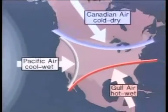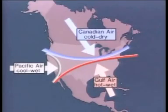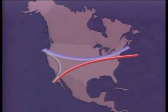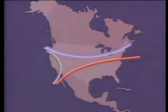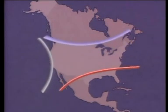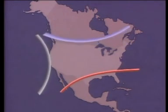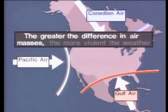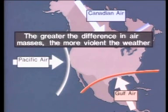When Canadian air and Gulf air come in contact, there is a great difference in temperature and humidity between the air masses, so there is very violent weather at the front — great winds and a lot of rain. The weather at Pacific air fronts is not as violent because the difference in the air masses is not as great. The greater the difference in air masses, the more violent the weather at the front.